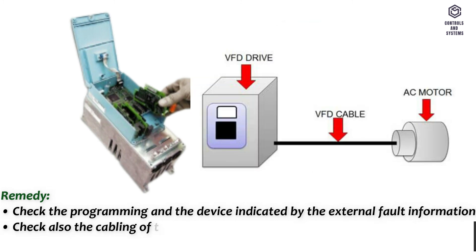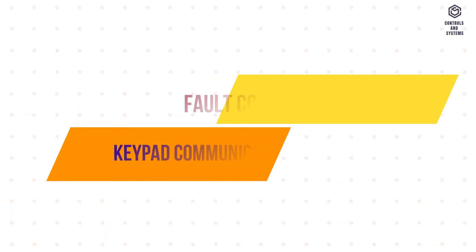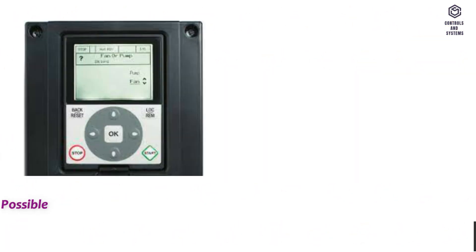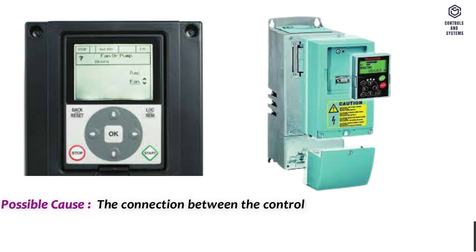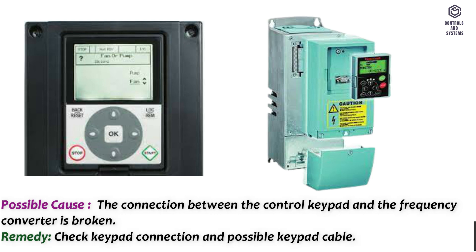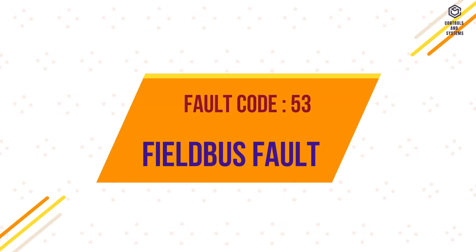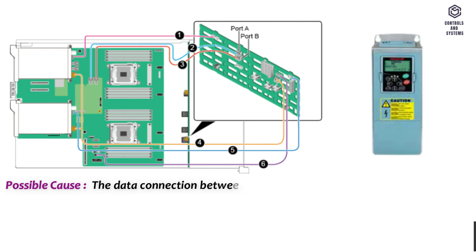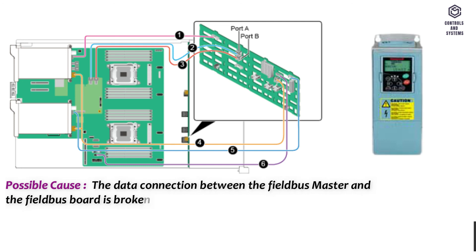Fault code 52 – Keypad communication fault. Possible cause: the connection between the control keypad and the frequency converter is broken. Remedy: check keypad connection and possible keypad cable. Fault code 53 – Field bus fault. Possible cause: the data connection between the field bus master and the field bus board is broken. Remedy: check installation; if installation is correct, contact technical support.